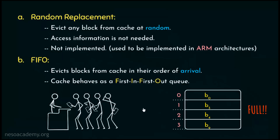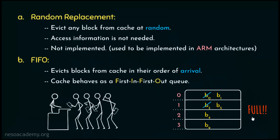Now suppose the processor requests a new block. In that case, the block which got placed inside the cache first will be evicted and make space for the newly requested block. After the block is placed, the cache will again become full. At this point, if the processor again asks for a new block, amongst all the blocks present inside the cache, whichever got placed inside the cache first will be evicted and make space for the newly requested block. This is how the first-in-first-out FIFO cache replacement policy works.